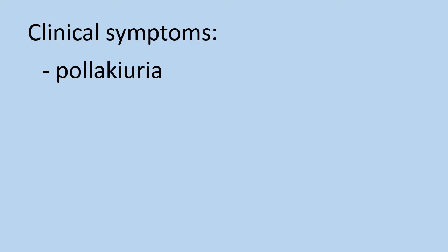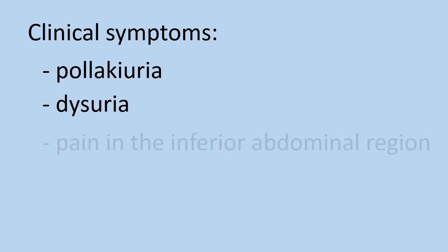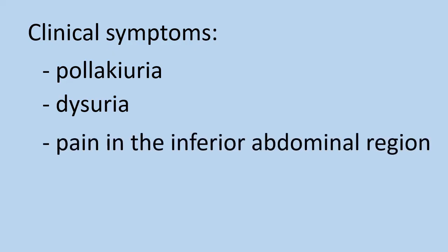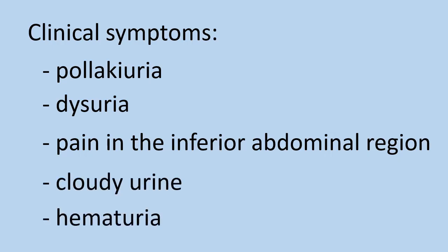Clinical symptoms include polycuria, which is an abnormally frequent urination; dysuria, which is pain or a burning sensation during urination; pain in the inferior abdominal region; cloudy urine; and hematuria, meaning blood in urine, but this symptom is rare in cystitis.